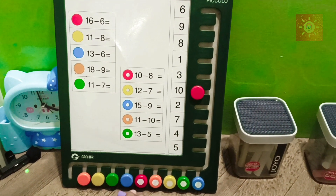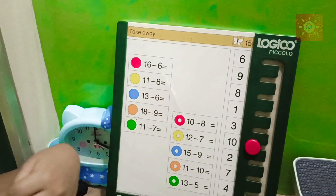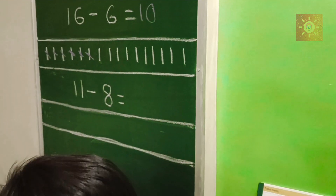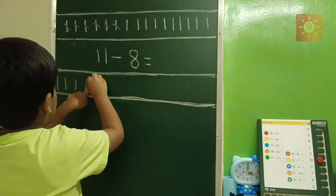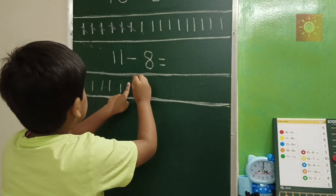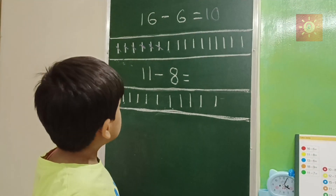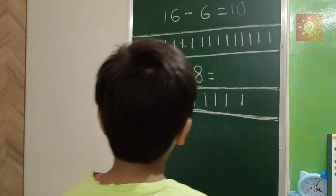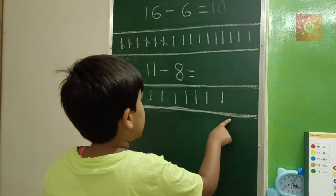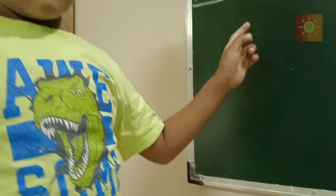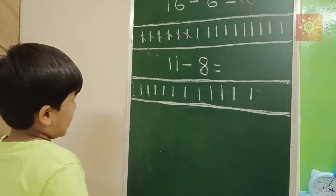Ten, okay! With the next problem - I am done with 16 minus 6. Now we are doing 11 minus 8. It's already eight in here. So now I will draw 11 lines. Okay - three, four, five, six, seven. Now we are going to do 11 minus 8, friends. I will count the lines: one, two, three, four, five, six, seven, eight, nine, ten, eleven. It's 11 lines, friends. So now, how many lines do we have to cross out? Eight lines.